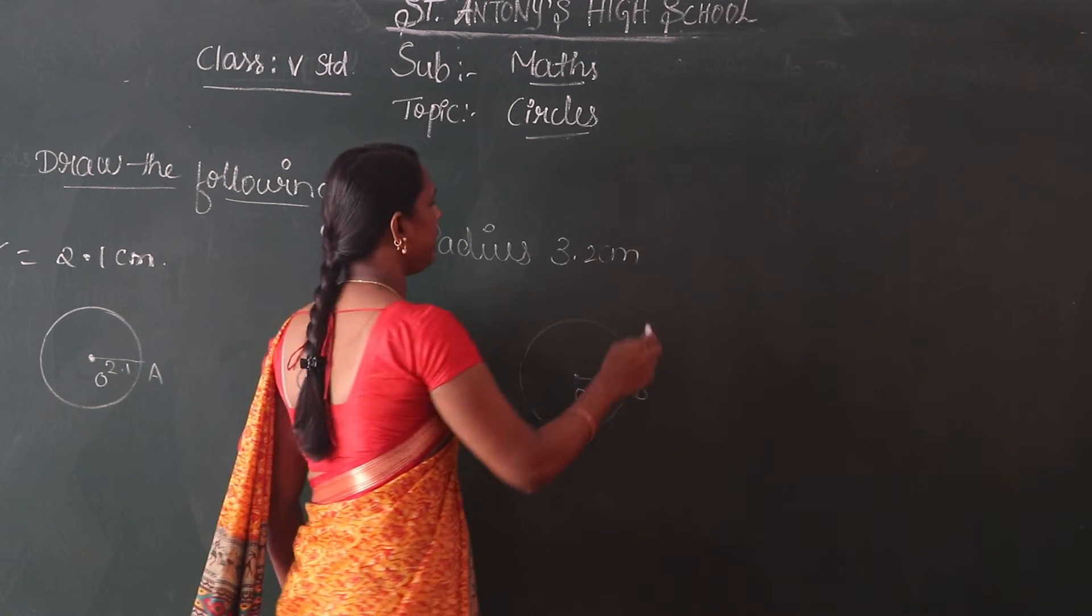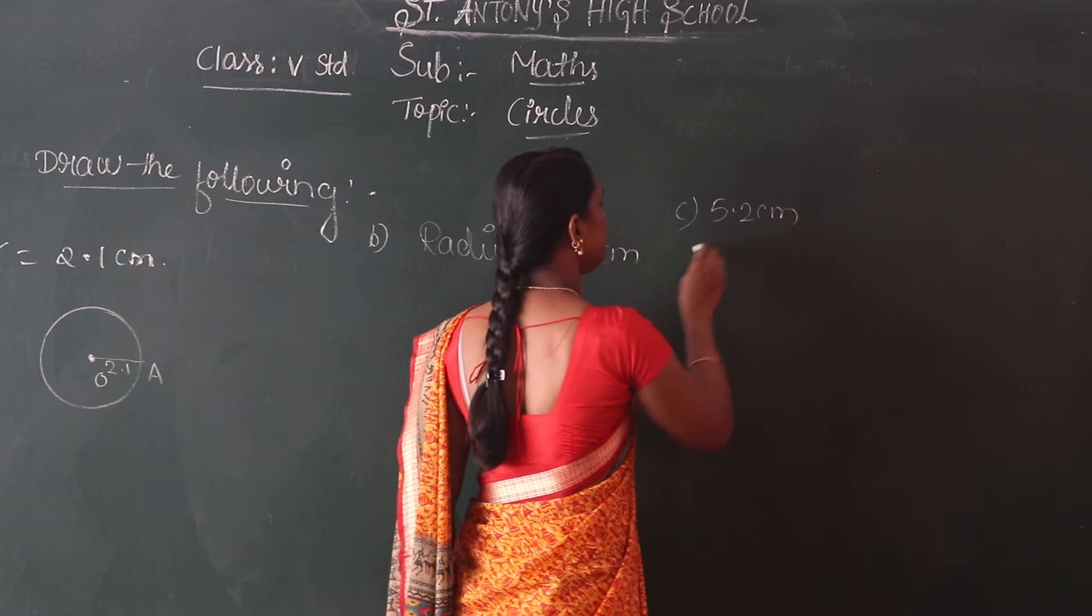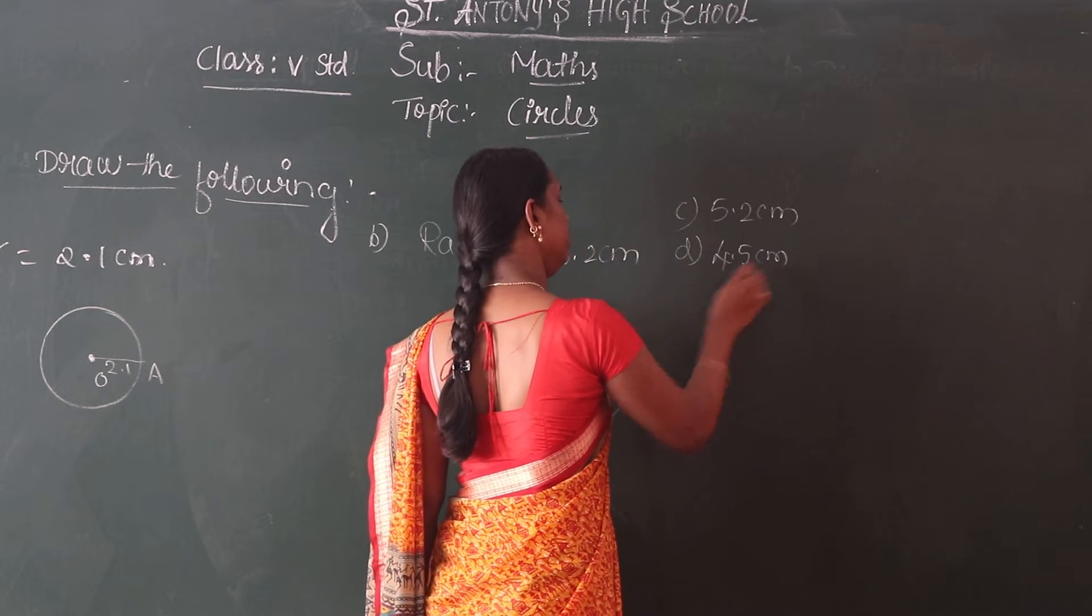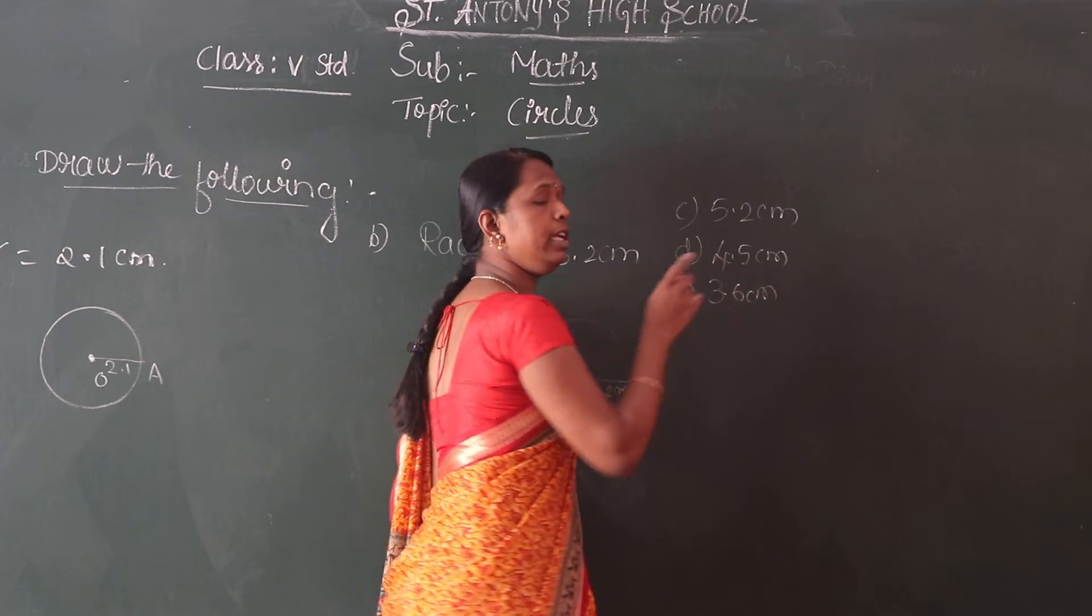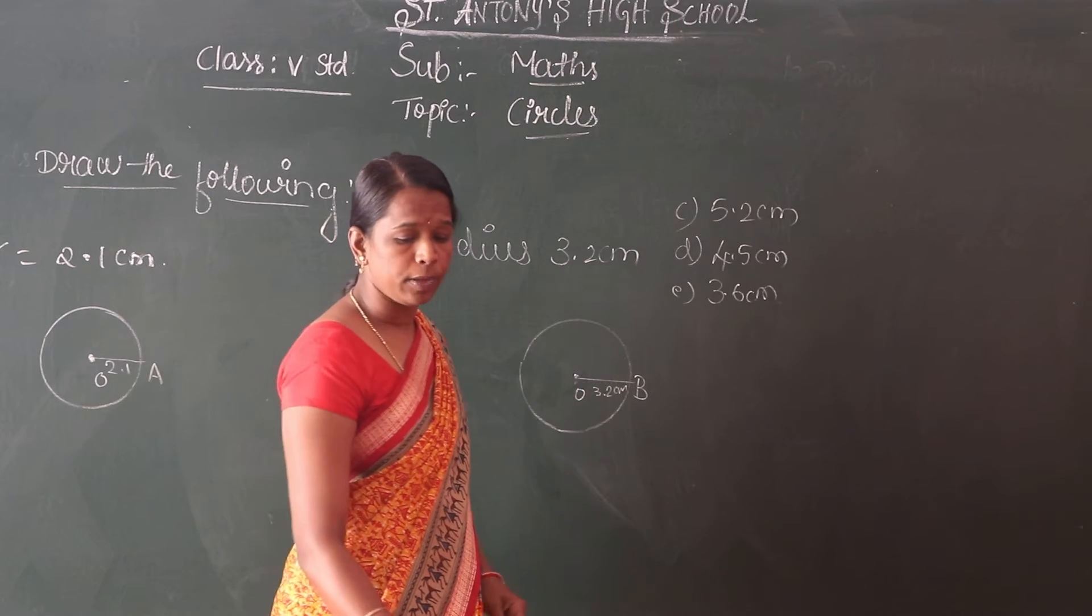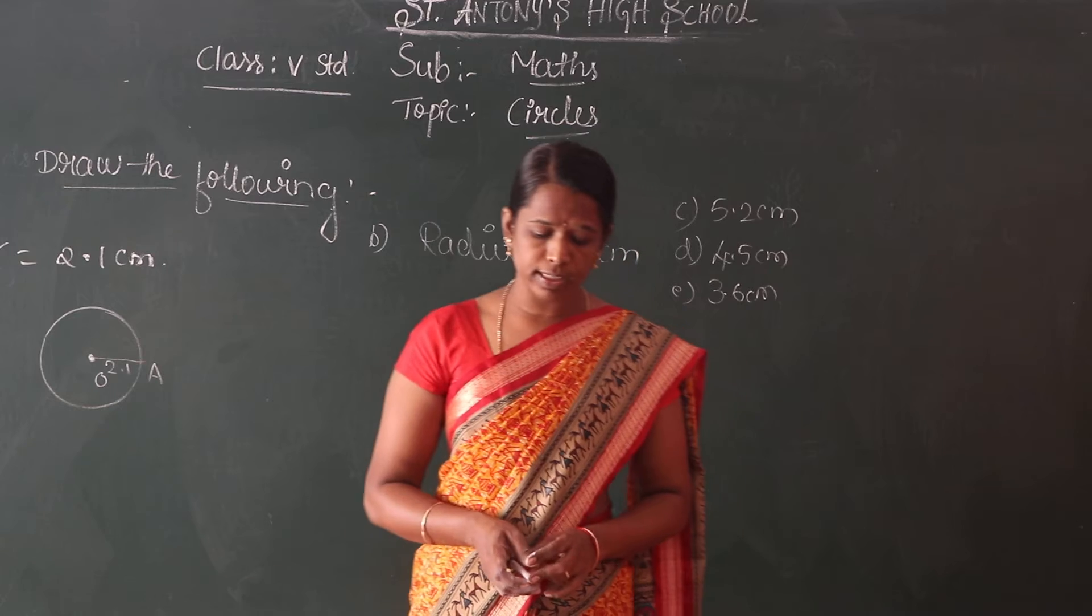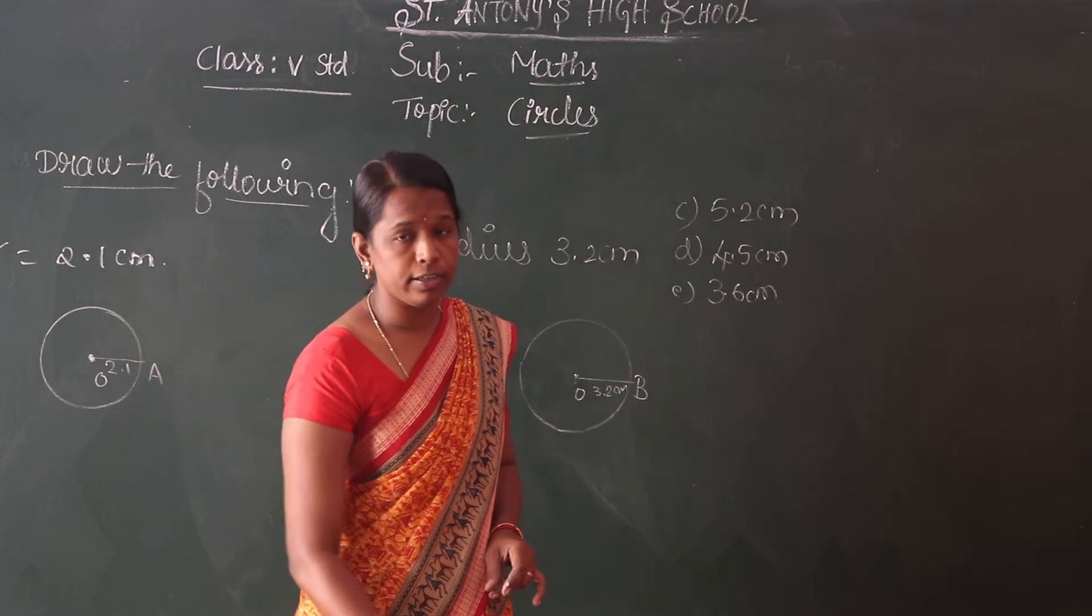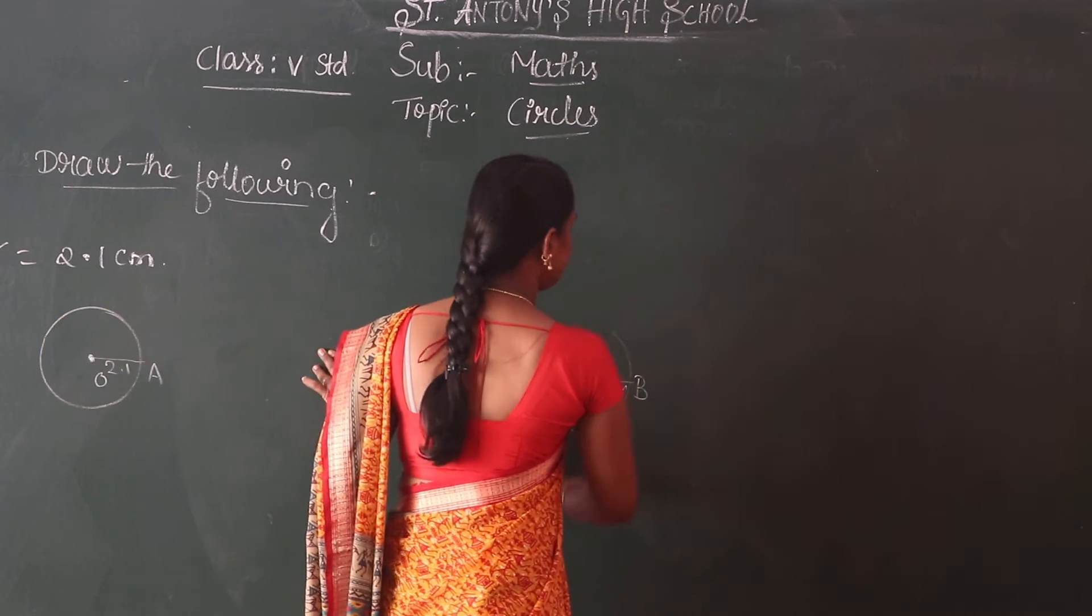Here are more, for example C: 5.2 cm, D: 4.5 cm, E: 3.6 cm. These three you have to practice in your workbook. After then mark the point with O. Draw the circles with radius 2 cm, 3 cm, 4 cm, 5 cm, and 6 cm from your exercise.